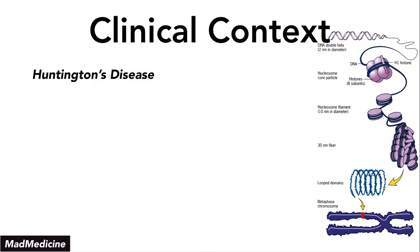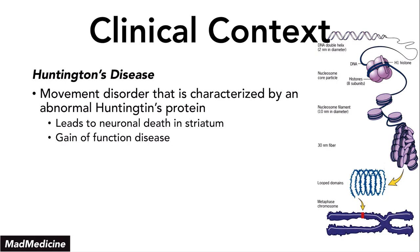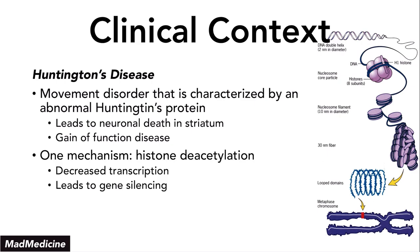Another condition is Huntington's disease — a movement disorder characterized by the abnormal Huntington protein. When you have an abnormal Huntington protein, you will see neuronal death in the striatum, and that is essentially a gain-of-function disease. When you have a gain-of-function disease, they are not able to control their movements — movements occur essentially on their own and they don't have the proper ability to stop them. One mechanism of Huntington's disease is histone deacetylation. In this condition, because you are deacetylating, you are closing up the actual gene, and that leads to decreased transcription as well as gene silencing. The DNA that encodes for the Huntington protein gets silenced because of histone deacetylation.